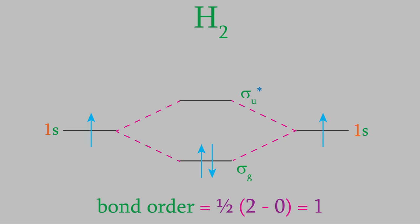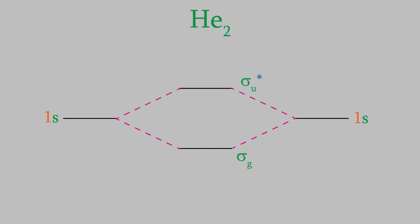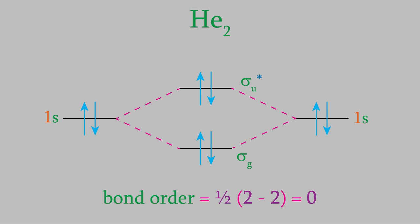By contrast, let's think about the MO diagram of a helium-2 molecule. Each helium atom has two 1s electrons, so the two atomic orbitals will look like this in the energy level diagram. Just as with the hydrogen molecule, the two 1s atomic orbitals combine to form a bonding and an antibonding orbital. This time, each 1s orbital contains two electrons, so there will be four electrons in the molecular orbitals. The first two go in the bonding orbital and the next two go in the antibonding one. That gives us a bond order of zero, meaning there's no bond between the atoms — an He2 molecule just doesn't exist.